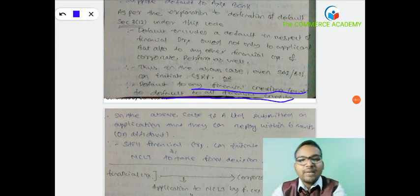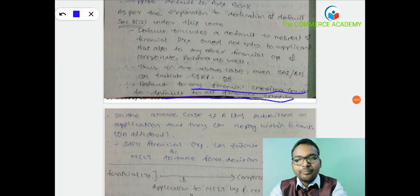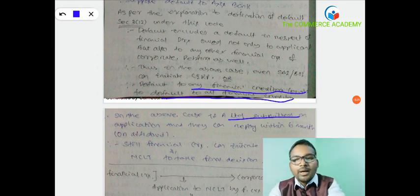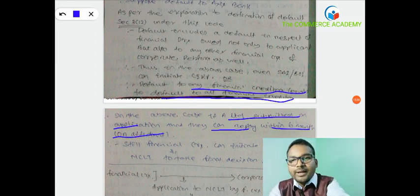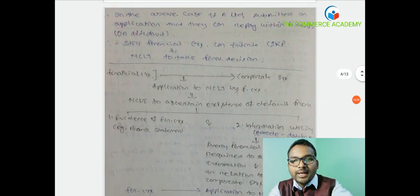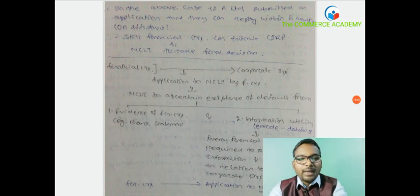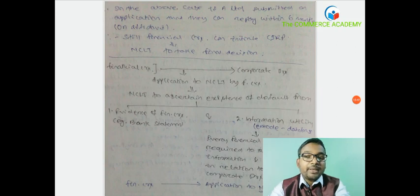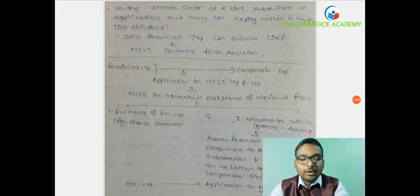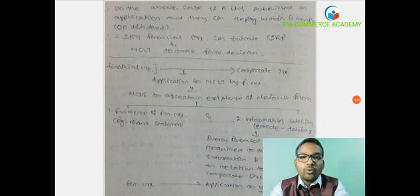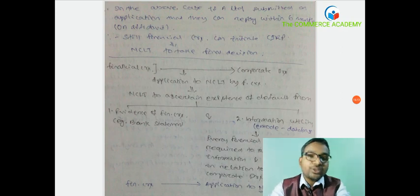Default to any one financial creditor leads to default to all financial creditors. If you default to one financial creditor, it means you have defaulted to all financial creditors. Even if A Limited submits an affidavit stating they can repay within six months, still financial creditors can initiate CIRP - it will still be considered a default. Other financial creditors can initiate CIRP by making an application to the adjudicating authority, that is NCLT.